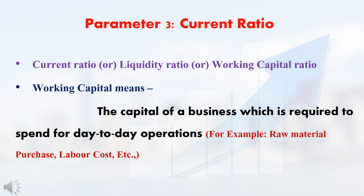First, we will see about Current Ratio. Current Ratio is otherwise called as Liquidity Ratio or Working Capital Ratio. Working Capital means the capital amount needed for running the day-to-day operations of the business — for example, purchase of raw materials, labor cost, electricity bill. Like this, the total amount spent for day-to-day operations is called Working Capital.